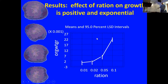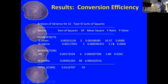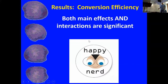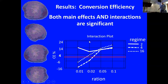You may notice this is somewhat different than what we got for oysters over this range — it's much lower. For conversion efficiency, both ration, regime, and the interaction were significant. We're especially happy about that. And here's what our data looked like — this is really different. This is not at all what conversion efficiency looked like in oysters and clams.